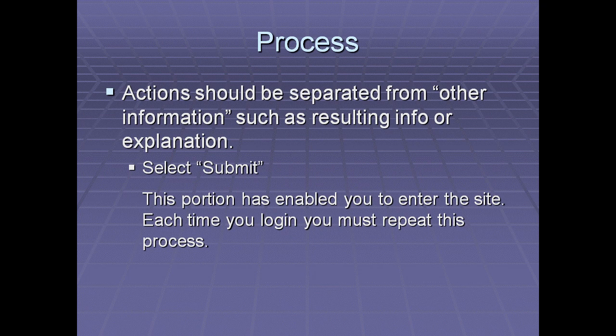Actions should also be separated from other information such as resulting information or explanations. For example, if a step says 'Select Submit,' you would add a space below it and then write 'This portion has enabled you to enter the site. Each time you log in, you must repeat this process.' We do this so that when someone looks away and looks back, they can quickly find their place. Notice that the action and the resulting information below it are aligned in exactly the same column so users can quickly see they are related.